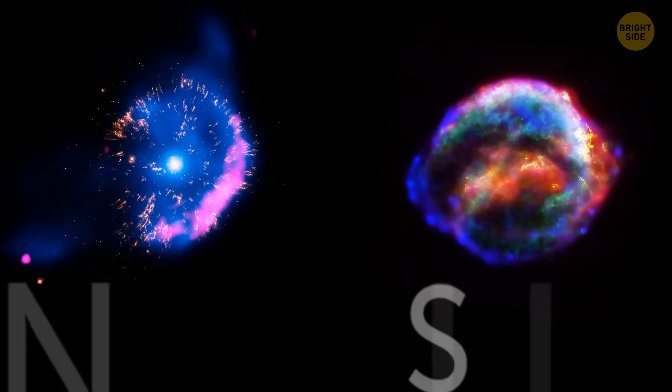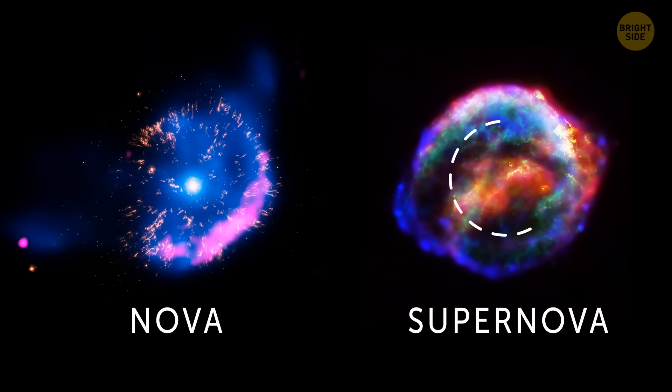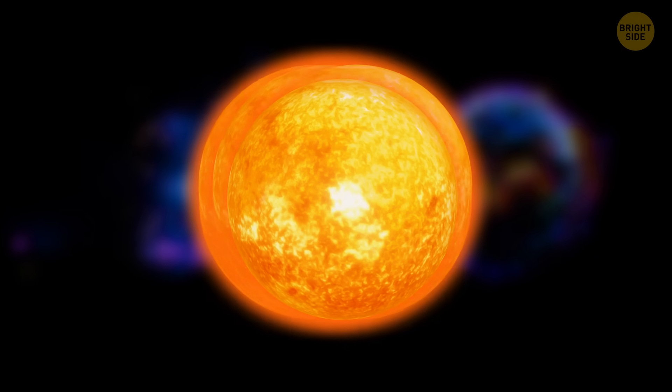Now, this event shouldn't be confused with a supernova. In a supernova, a star's core collapses, which leads to its complete destruction. It can only happen to a star eight times the mass of the Sun.